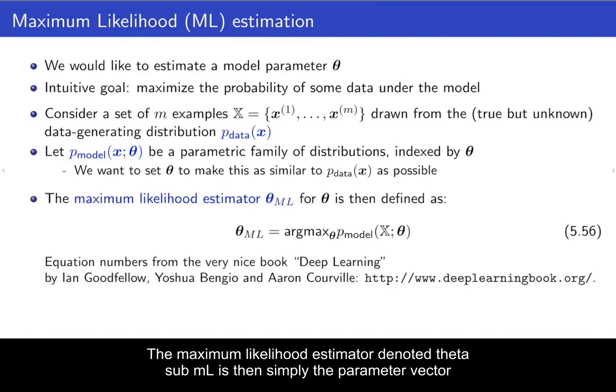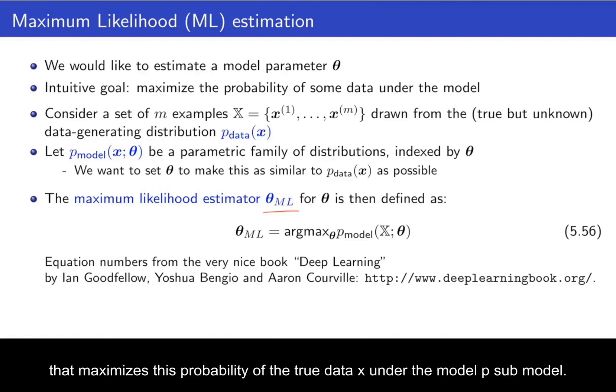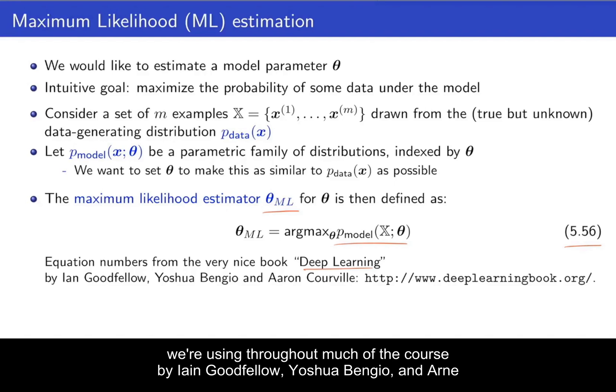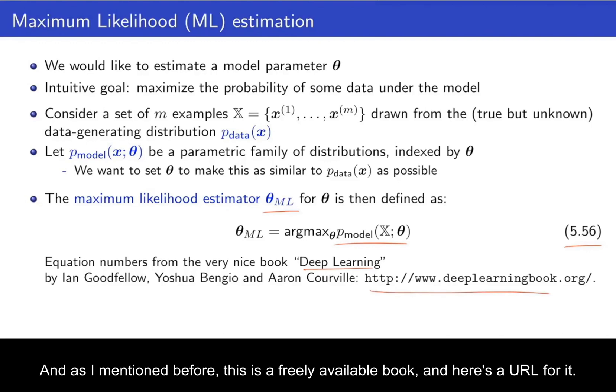And we want to set these parameter vector theta to make this distribution p_model as similar to the p_data as possible. The maximum likelihood estimator denoted theta_ML is then simply the parameter vector that maximizes this probability of the true data x under the model p_model. And the equation number I'm giving here is from this very nice book, Deep Learning, that we're using throughout much of the course by Ian Goodfellow, Yoshua Bengio, and Aaron Courville. And as I mentioned before, this is a freely available book. And here's a URL for it.